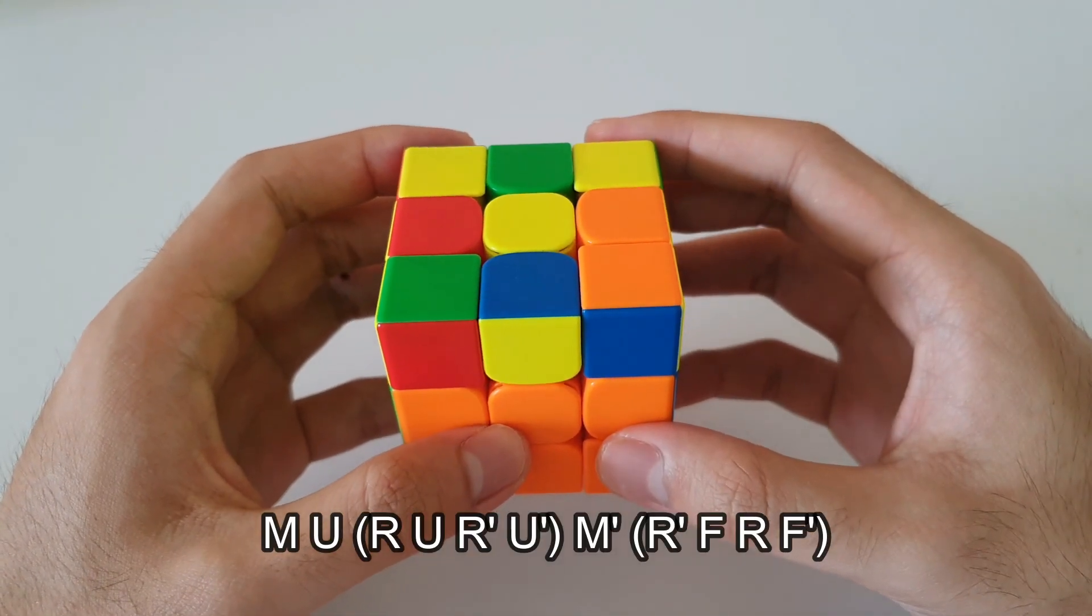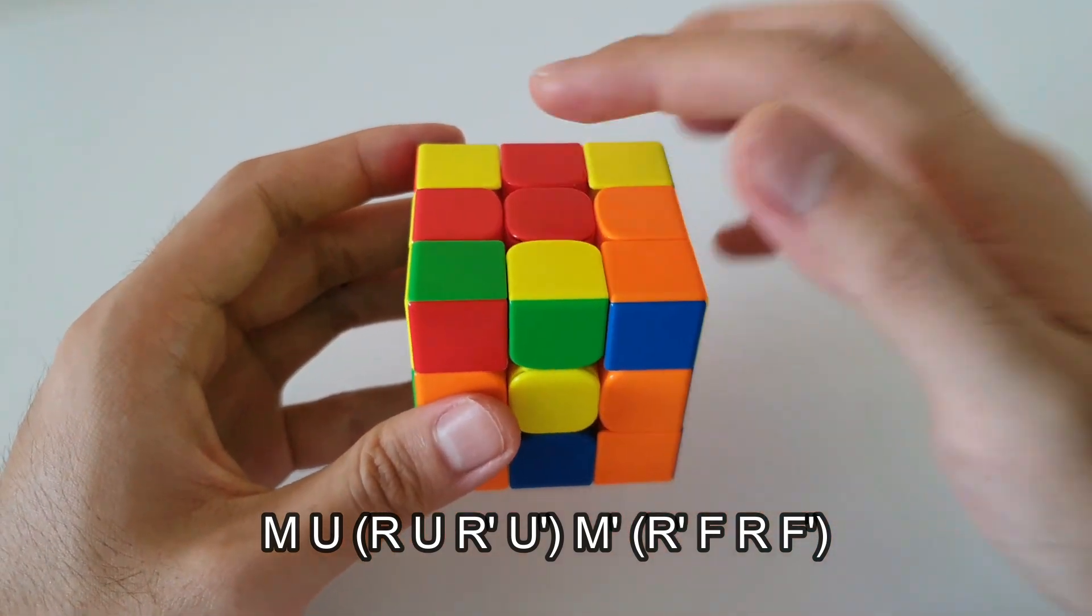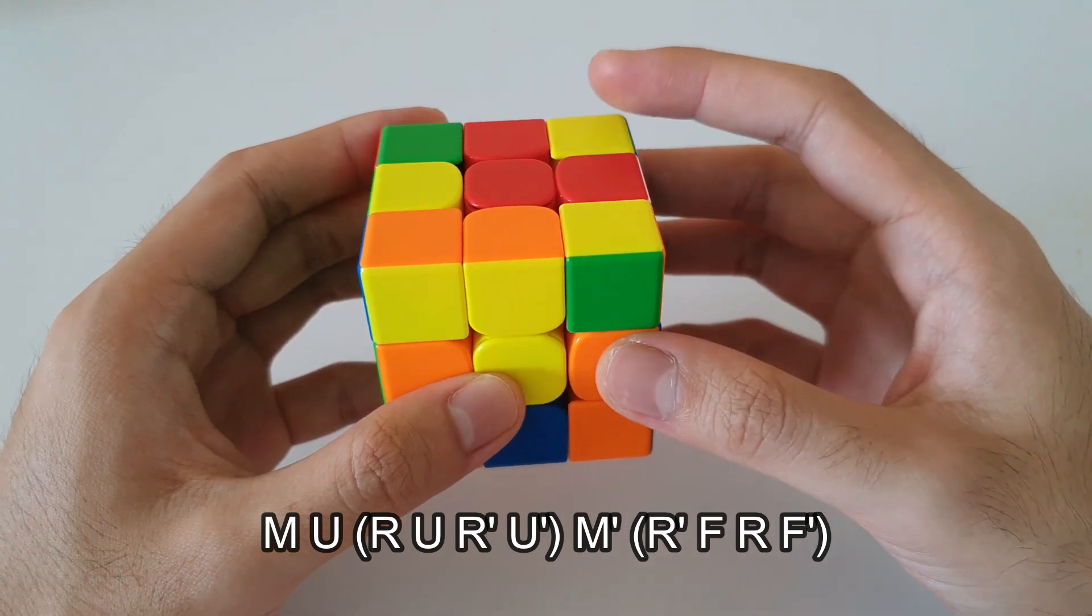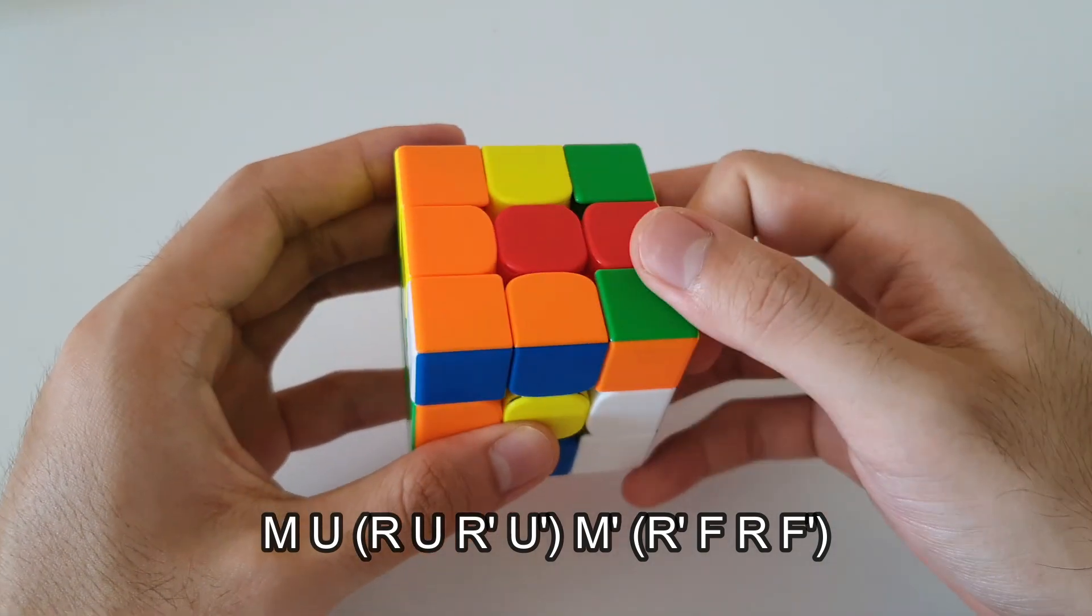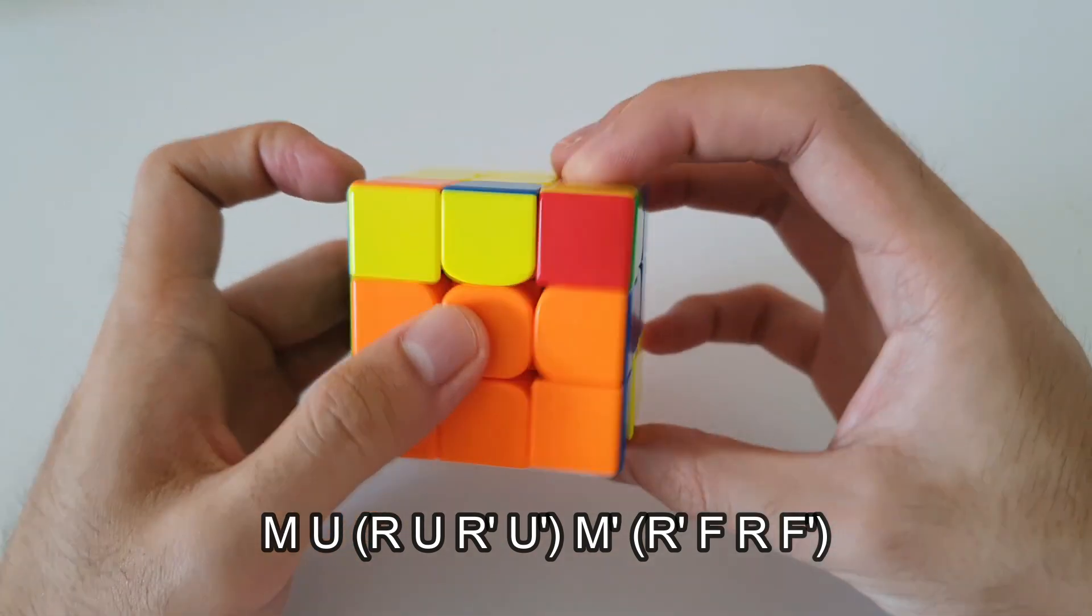So it starts off with an M followed by U. So we can do the M like this. So that's just middle layer down, followed by U. After that, we have a sexy, which we should all know how to do. M' followed by a sledge.